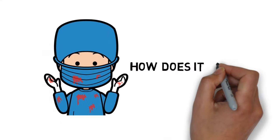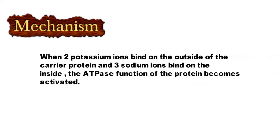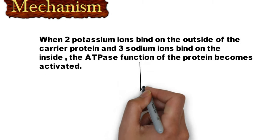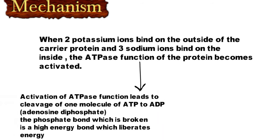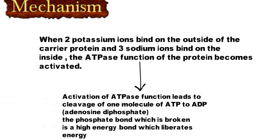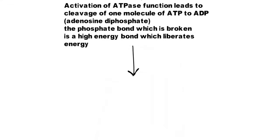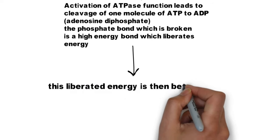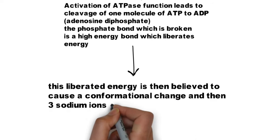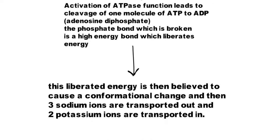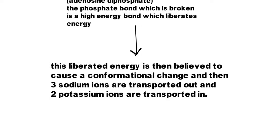We have discussed the structure of the pump. Now let's talk about the mechanism of how it works. When two potassium ions bind on the outside of the carrier protein and three sodium ions bind on the inside, the ATPase function becomes activated. This activation leads to the cleavage of one molecule of ATP to ADP. The phosphate bond which is broken is a high energy bond which liberates energy, and this liberated energy causes a conformational change. Then three sodium ions are transported out and two potassium ions are transported inside the cell.